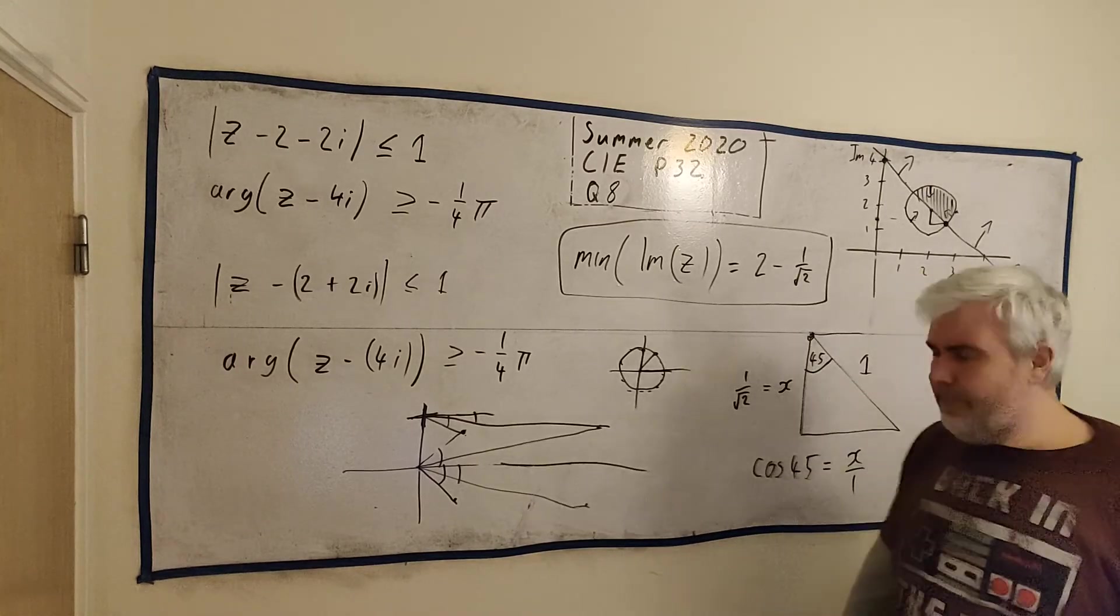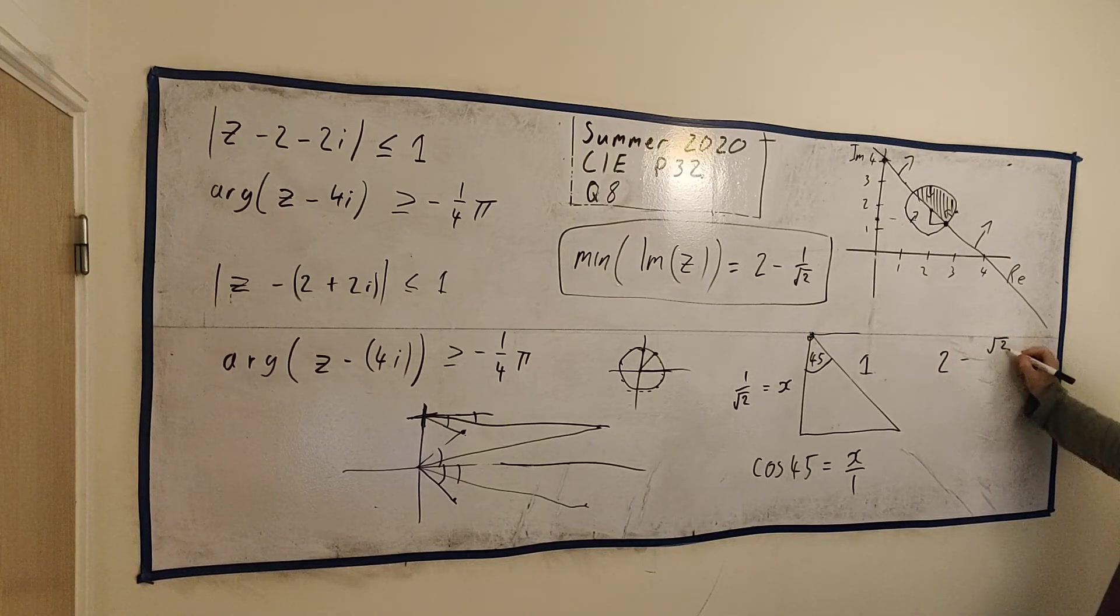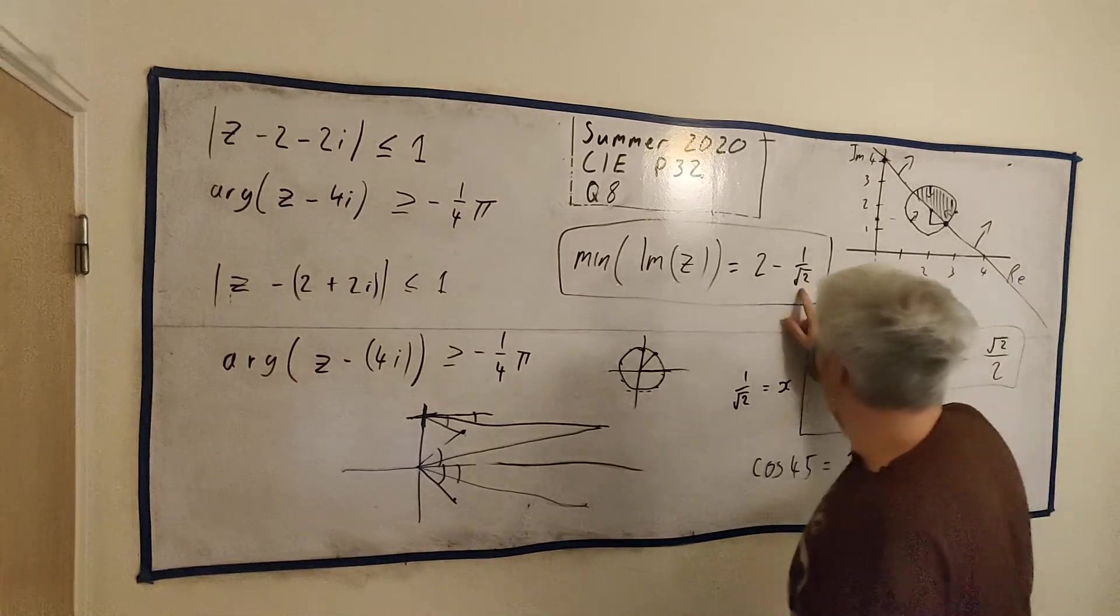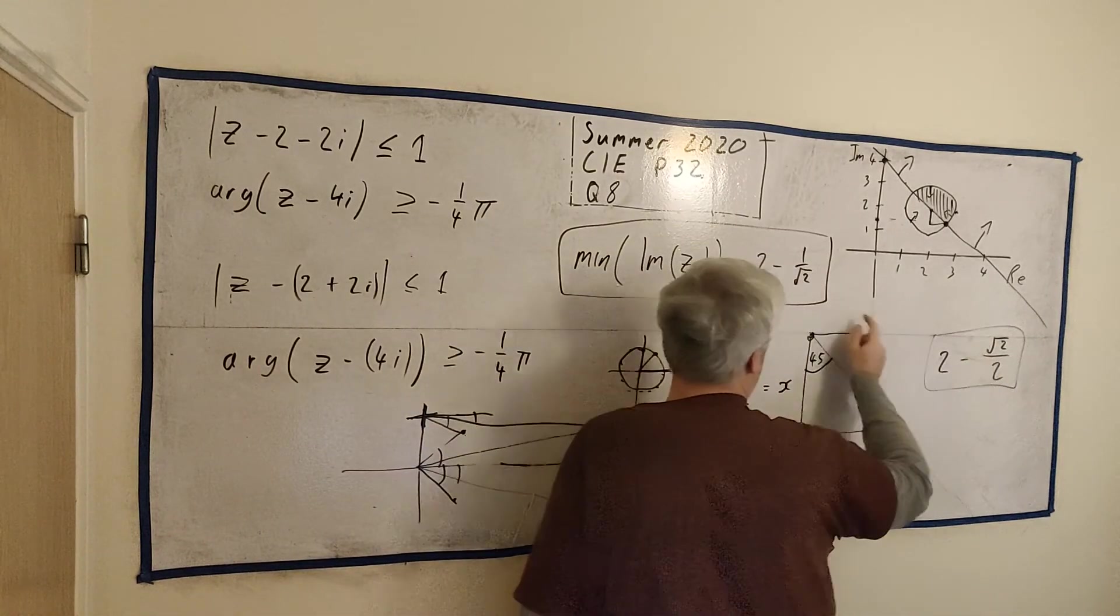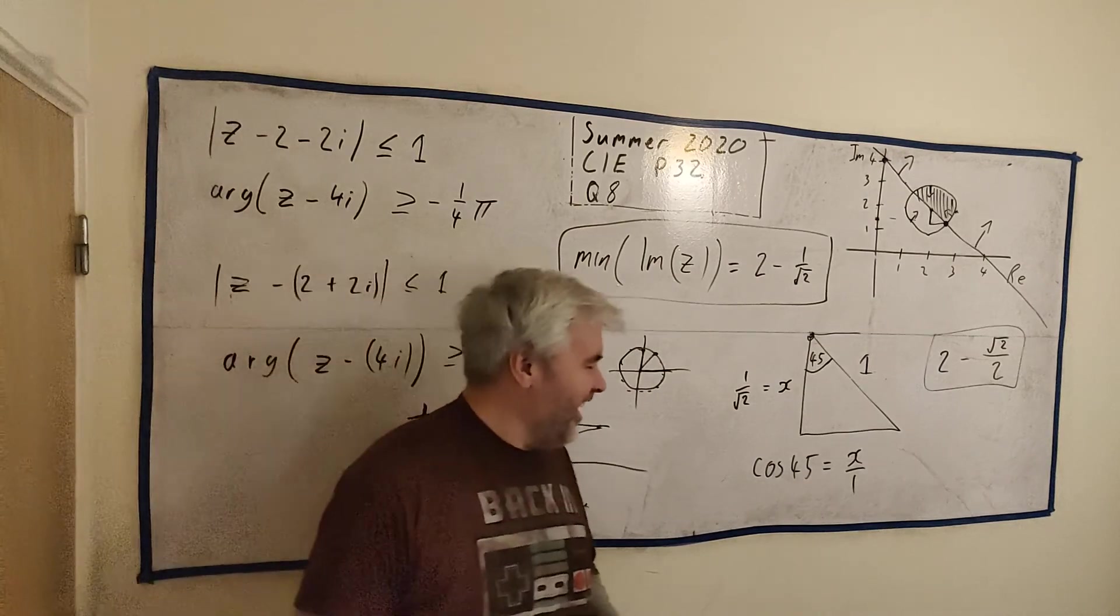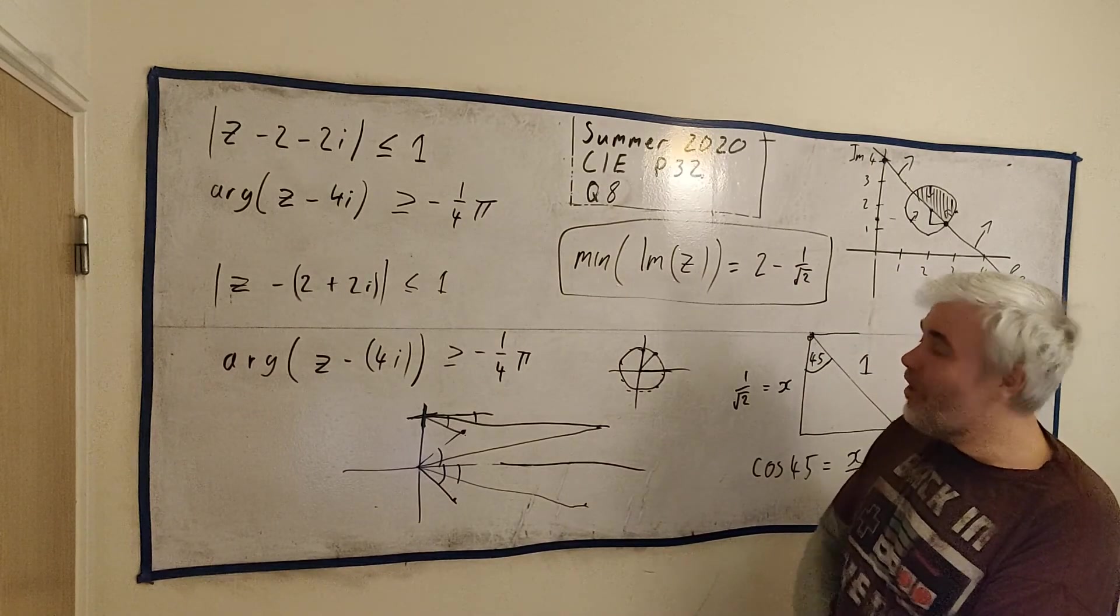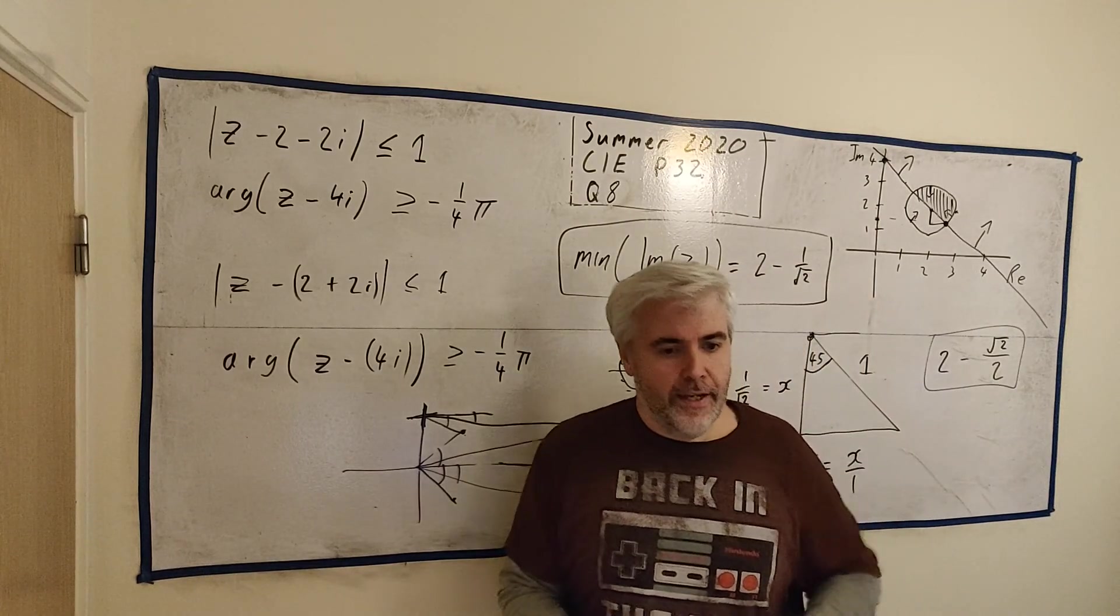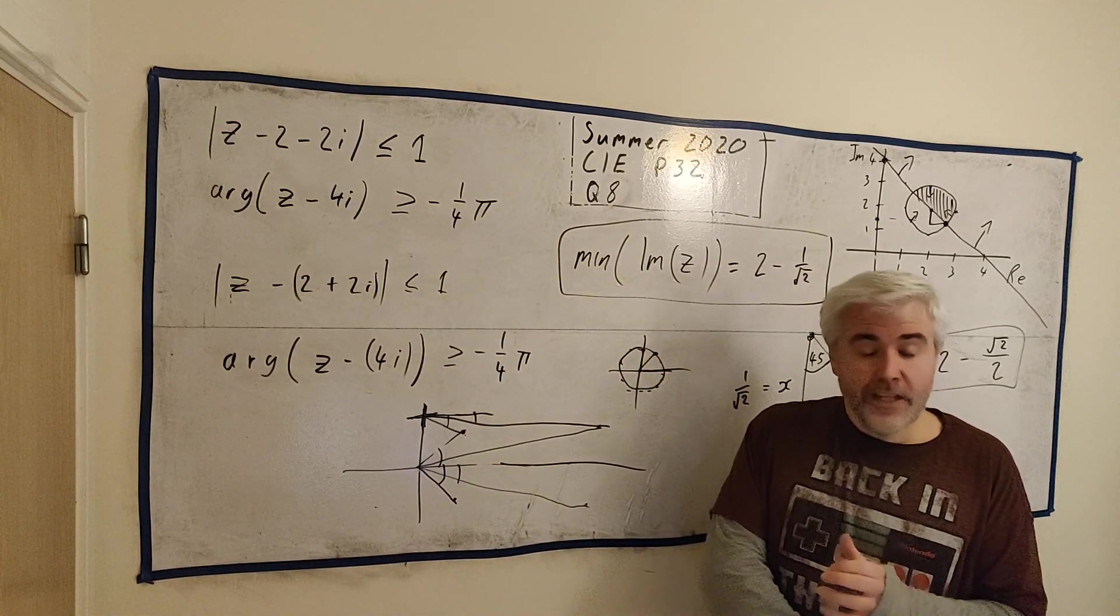I'll point out the answer scheme gives an answer of 2 minus square root of 2 over 2. It's the same answer, identical. They just don't like using square roots in the bottom row. So if you multiply top and bottom by the square root of 2, we get square root of 2 over 2. I hope that answers this question or at least gives you an idea where to look for more answers. In the comment section below would be a good place to ask and I will try my best to answer. Thanks for watching and have a great day.